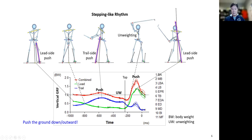During the backswing, because you have more force acting on the trail side, the center pressure shifts to the trail foot. During the downswing push, because a larger force is acting on the lead foot, the center pressure shifts to the lead side.